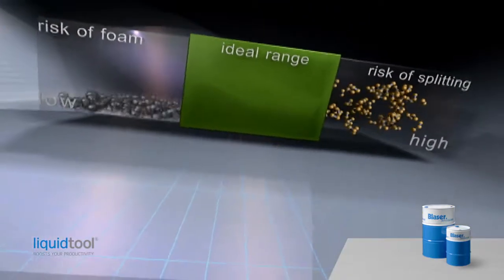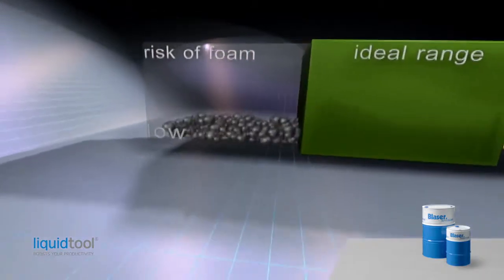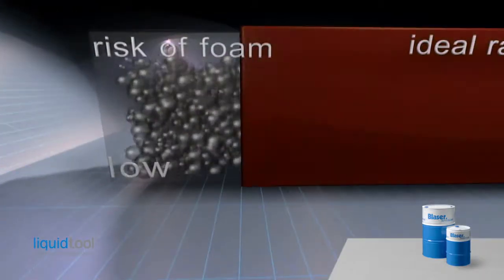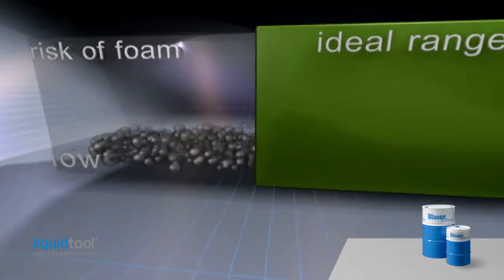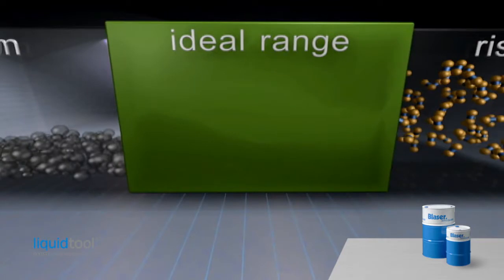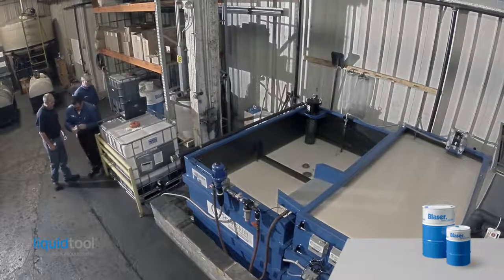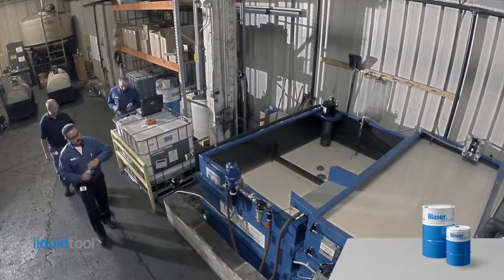One of the main quality criteria is water hardness. For foam control the water hardness has to be within a certain range. The ideal water hardness range for Blasocut emulsions is 10 to 25 degrees of German hardness depending on the product.